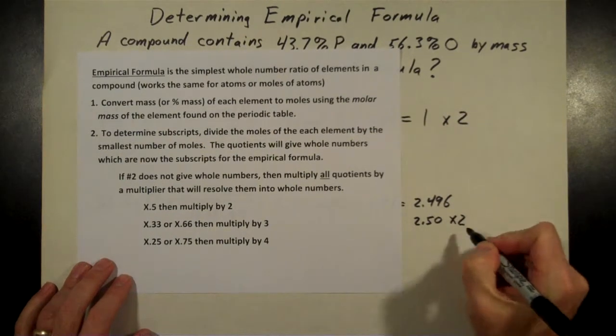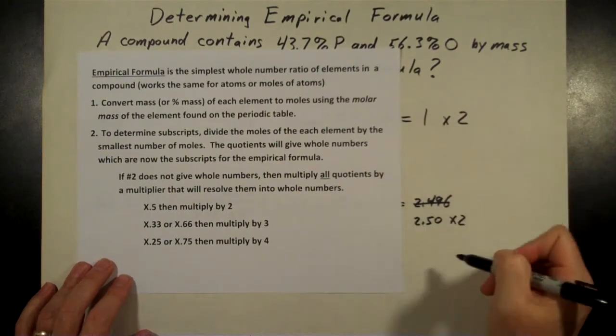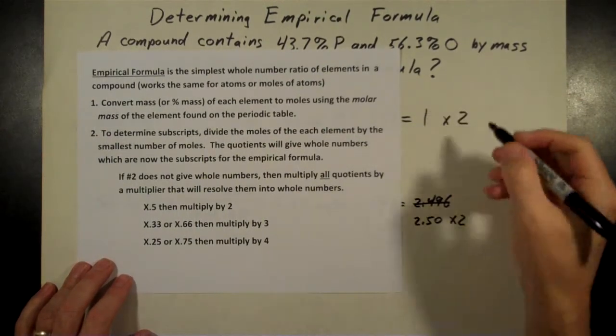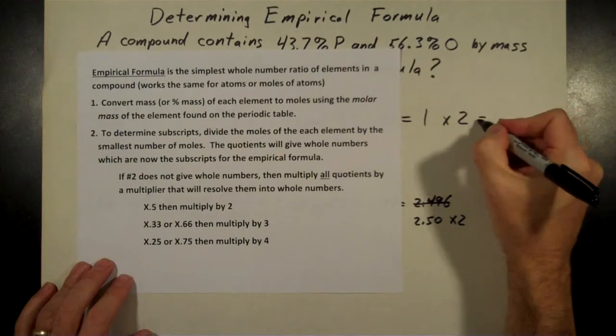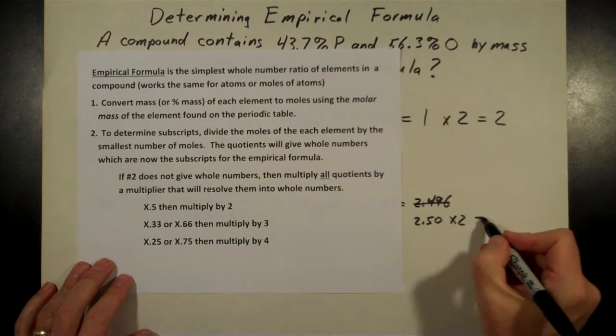This was my rounded off value there, so I have to do this to both of them though. I can't just do it to the 2.5, I have to do it to the 1 also because we want to maintain that ratio.